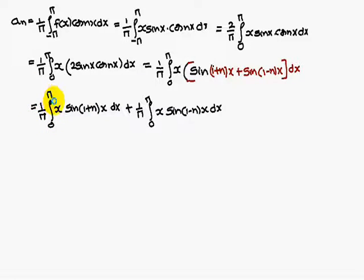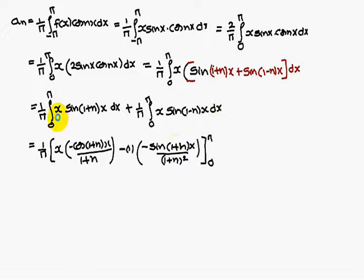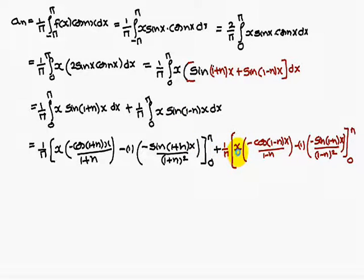Therefore, an equals 1 by pi times the integral from 0 to pi of x sin((1+n)x) dx, plus 1 by pi times the integral from 0 to pi of x sin((1−n)x) dx. Integrating the first part by parts: x times [minus cos((1+n)x) / (1+n)] minus 1 times [minus sin((1+n)x) / (1+n)²], evaluated between 0 and pi.